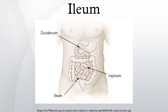Lacteals are small lymph vessels present in the villi. They absorb fatty acids and glycerol, the products of fat digestion. Layers of circular and longitudinal smooth muscle enable the chyme to be pushed along the ileum by waves of muscle contractions called peristalsis. The remaining chyme is passed to the colon.